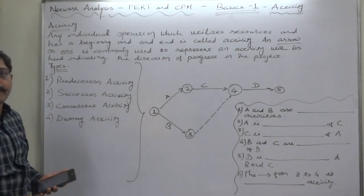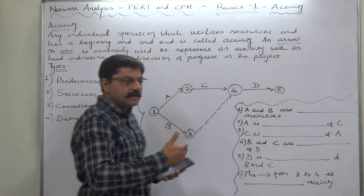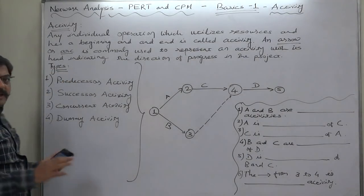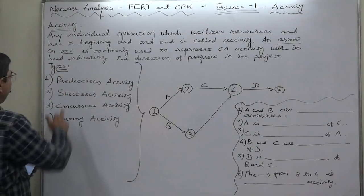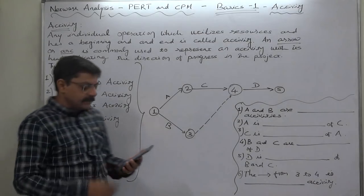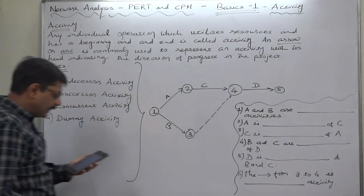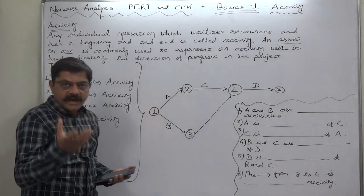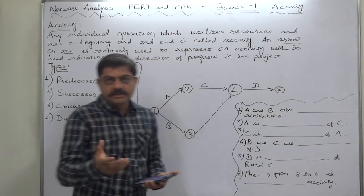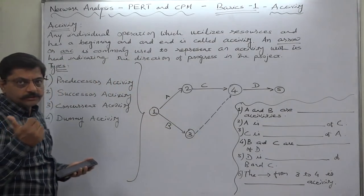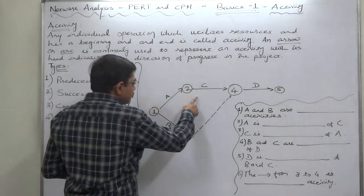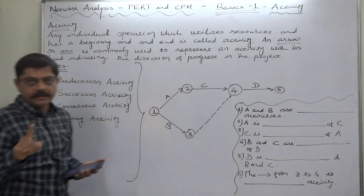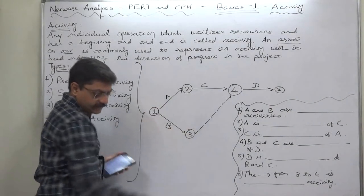With the ending of various activities, the project ultimately progresses. We can classify activities into four categories. The first is predecessor activity — activities that must be completed immediately prior to the start of another activity are called predecessor activities. To start an activity, one or more other activities should end first. For example, in this diagram, if we want to start C, first A should be completed — that means A is the predecessor of C.